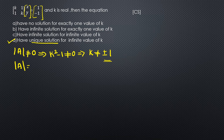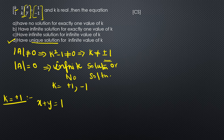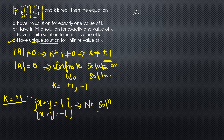When the determinant equals 0, we have either infinite solutions or no solution, which occurs when k equals plus 1 or minus 1. For k equals plus 1, the system becomes x plus y equals 1 and x plus y equals minus 1. The left-hand sides are the same but the right-hand sides differ, so there is no solution. Option A is true.